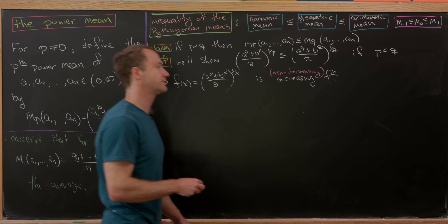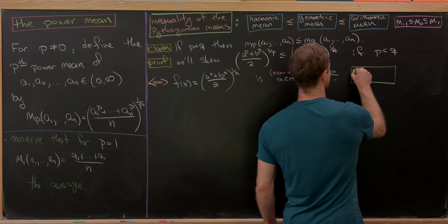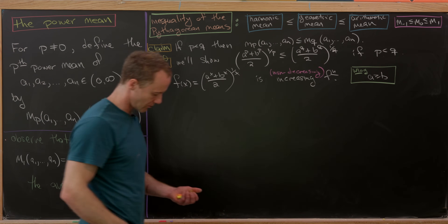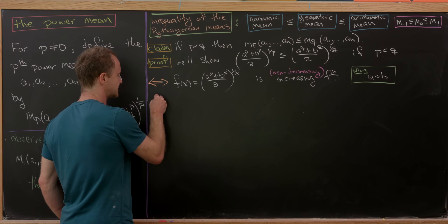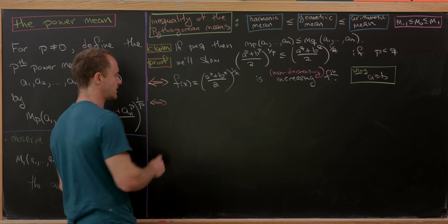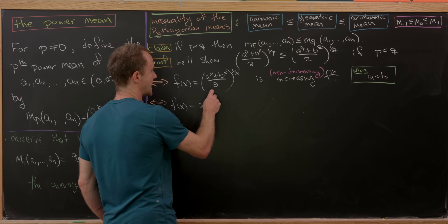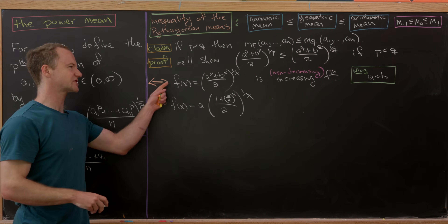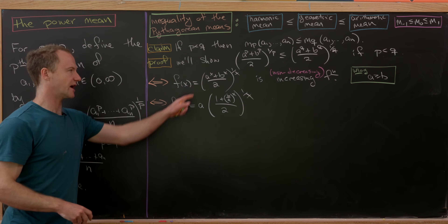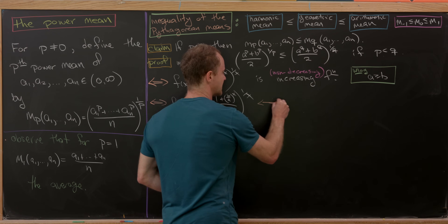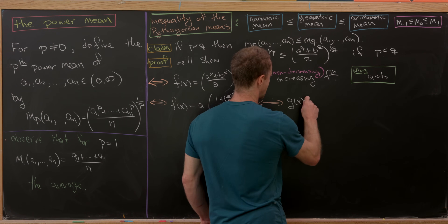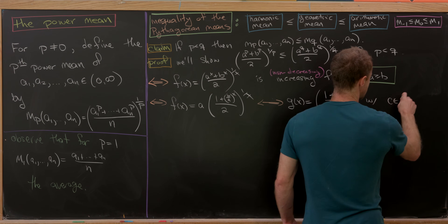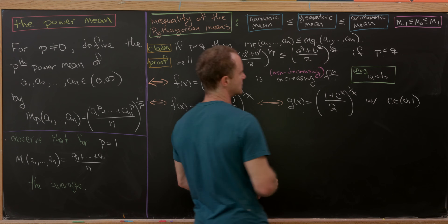We apply a simplification: assume a ≥ b, so c = b/a satisfies 0 < c ≤ 1. Then f(x) = a · ((1 + (b/a)^x)/2)^(1/x), and f is increasing if and only if the function g(x) = ((1 + c^x)/2)^(1/x) is increasing. So it suffices to show g is non-decreasing.